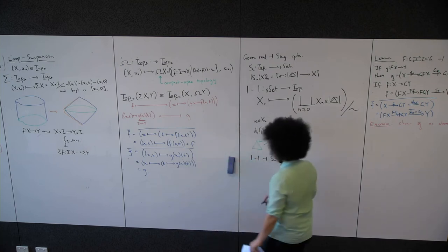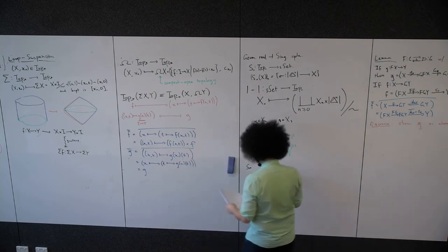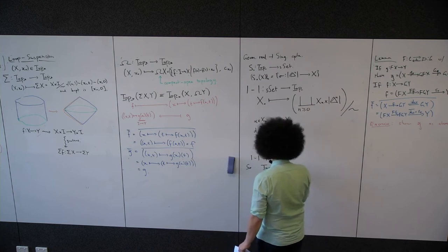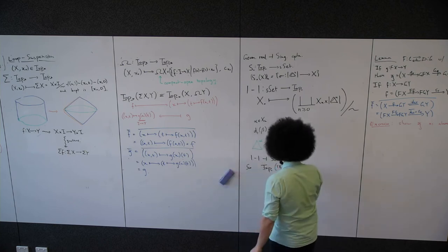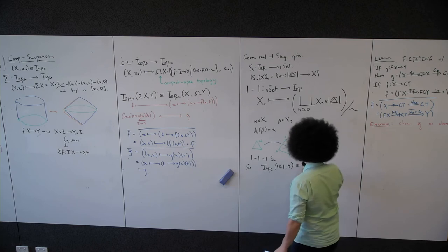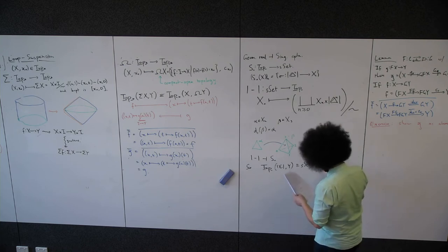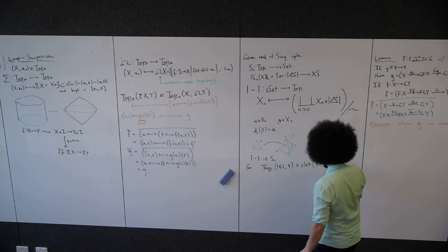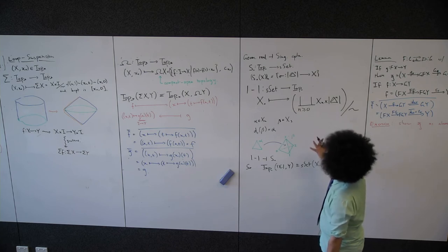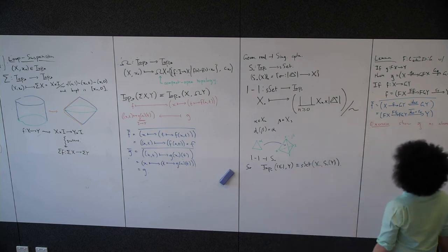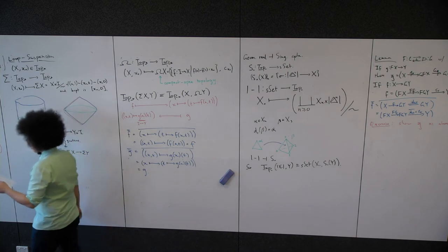The point is that geometric realization is left adjoint to the singular complex. So maps from the geometric realization |X•| into a space Y are the same as maps between simplicial sets from X• to S•(Y). This is a very important functor in algebraic topology. Now I'm going to put up a definition of homology on the board.